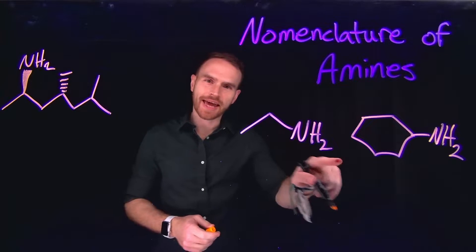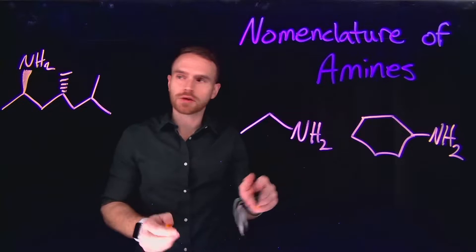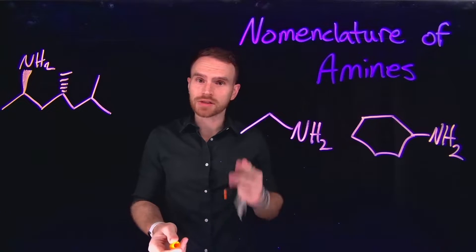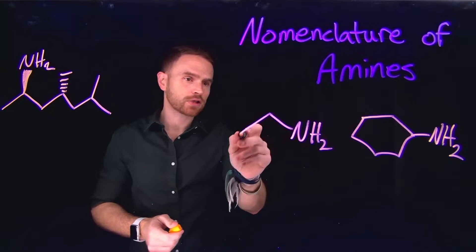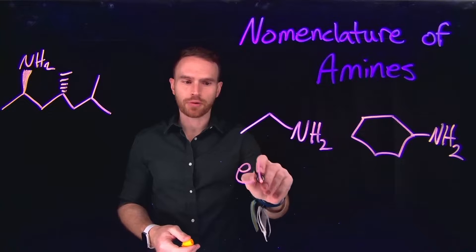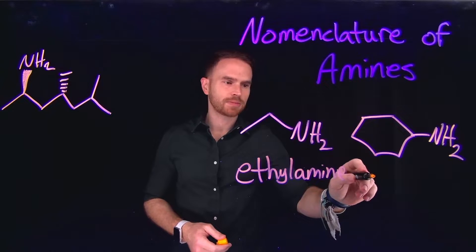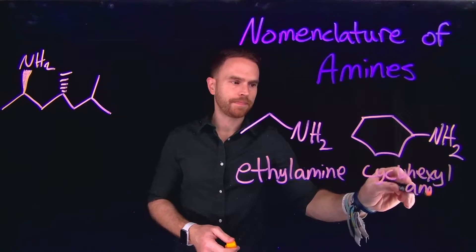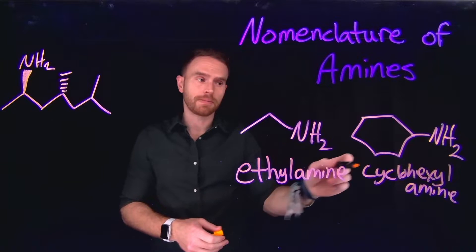A primary amine is a compound that contains an NH2 group connected to a single alkyl chain. Here are several different examples of primary amines. Notice that the complexity of the alkyl chains is very different in each of these examples. IUPAC recognizes two different nomenclatures for primary amines. For relatively straightforward alkyl groups — this one is just a simple ethyl group, so it is called ethylamine, and this six-membered ring is called cyclohexylamine — the nomenclature is just the alkyl chain followed by the word amine.